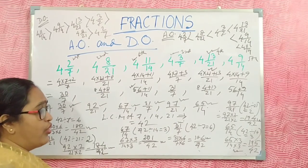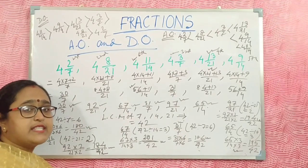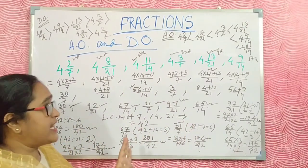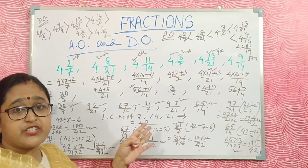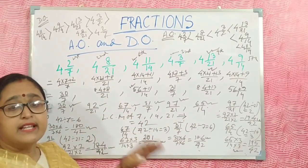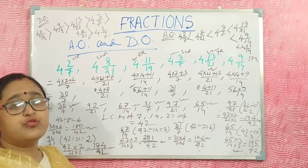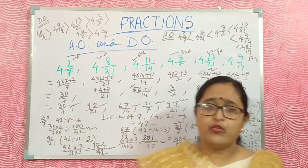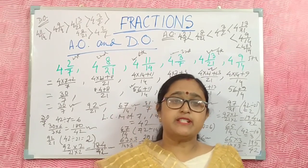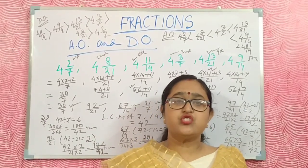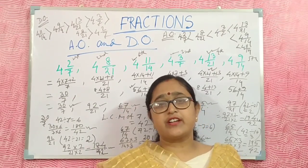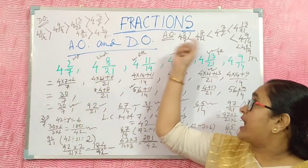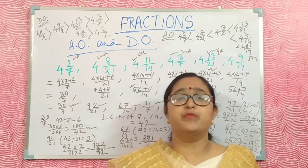Before going to the next part of the video, just pause and write it down. This is the process: when the denominator is different — unlike fractions — and the fractions are mixed fractions, first convert to improper fractions, then find the LCM, make the denominator the same, and then do ascending or descending order.